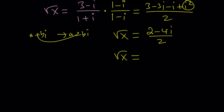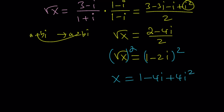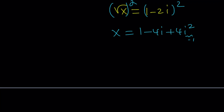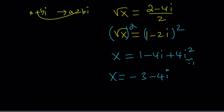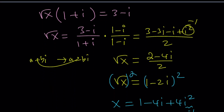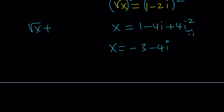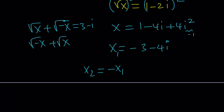Let's simplify square root of x and then find x by squaring both sides. So square root of x equals 1 minus 2i. Squaring both sides: x equals 1 minus 4i plus 4i squared. Now 4i squared is negative 4, so this becomes 1 minus 4, which is negative 3 minus 4i. This is one solution. But notice: if you replace x with negative x in the original equation, it still works. So if x is a solution, then negative x is a solution too. So x₁ = −3 − 4i and x₂ = 3 + 4i — those are both solutions, and they're opposites, not conjugates.